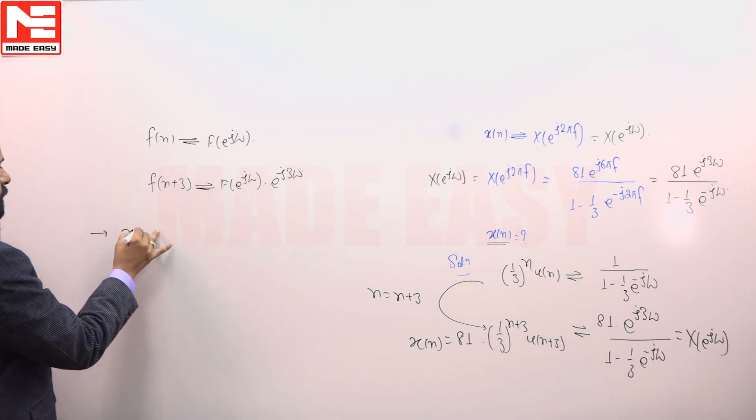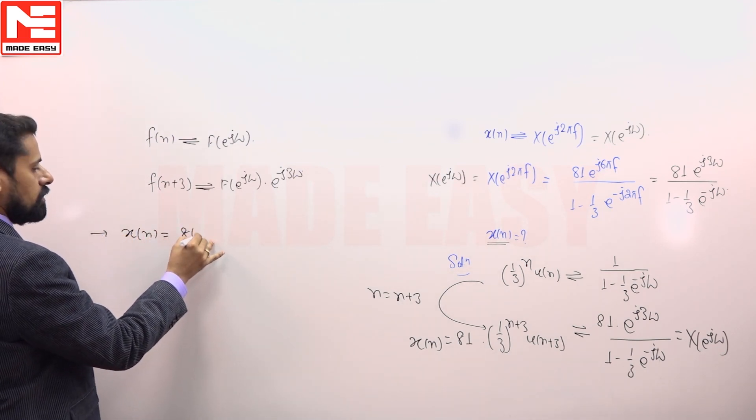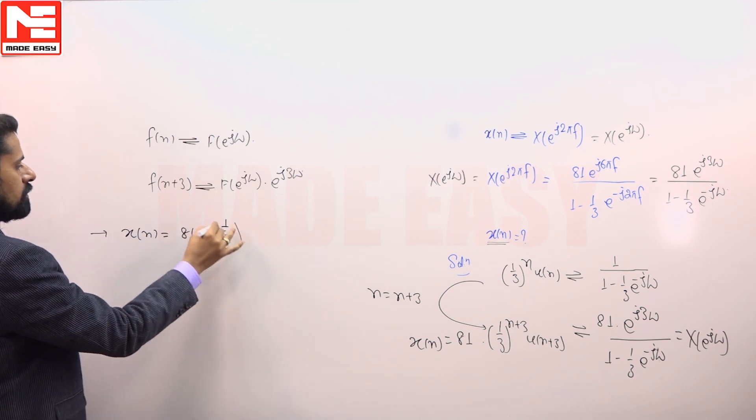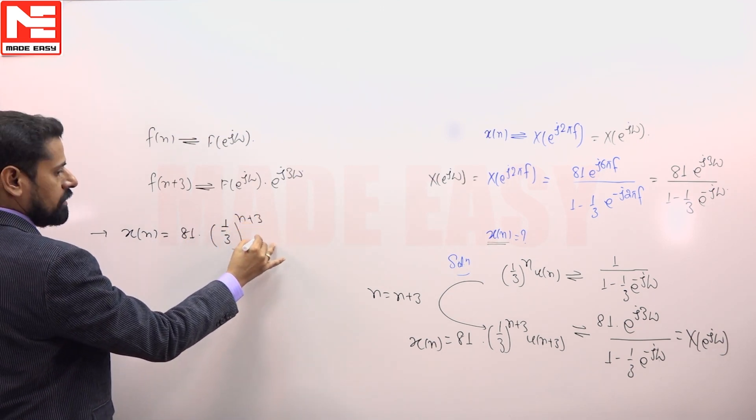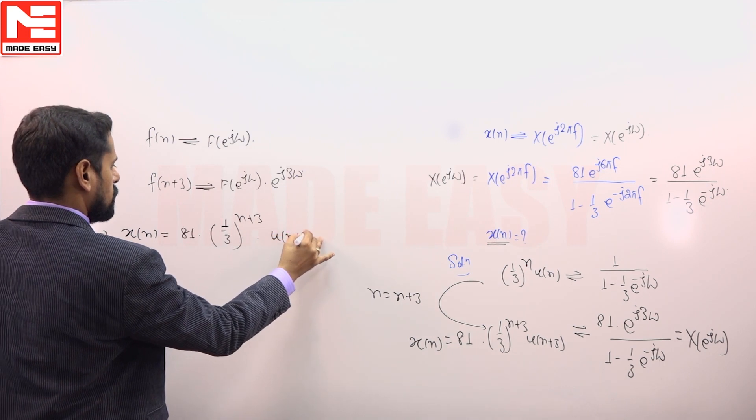So we have obtained x of n and it is equal to 81 into (1/3)^(n+3) into u of n plus 3.